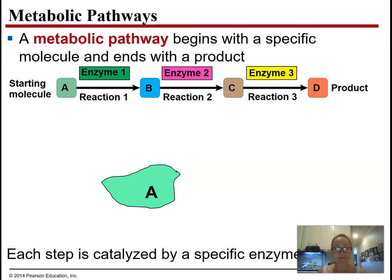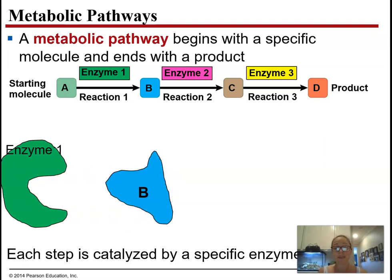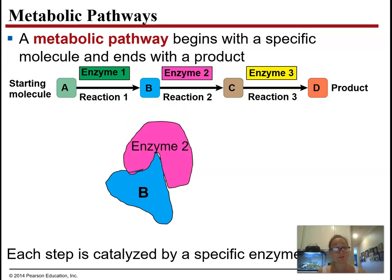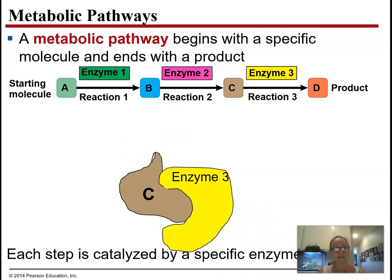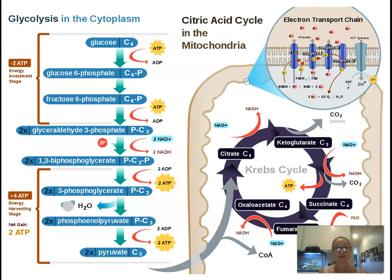To illustrate: molecule A is a substrate for enzyme one, which converts it to product B. B becomes the substrate for enzyme two, producing C, which is then a substrate for enzyme three, yielding the final product. That's just three enzymes, but in reality metabolic pathways can be much longer — glycolysis alone is a pathway of ten different chemical reactions, each controlled by its own enzyme.